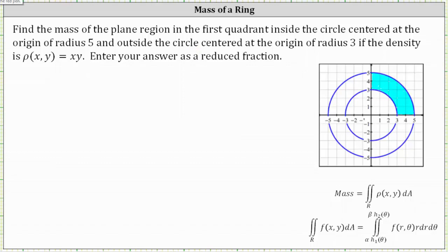I've already graphed the region R on the coordinate plane. The mass is equal to the double integral over the region R of the density function, which is rho of x comma y equals xy, differential A. However, because our region is between two circles, we will use polar coordinates to determine the mass.